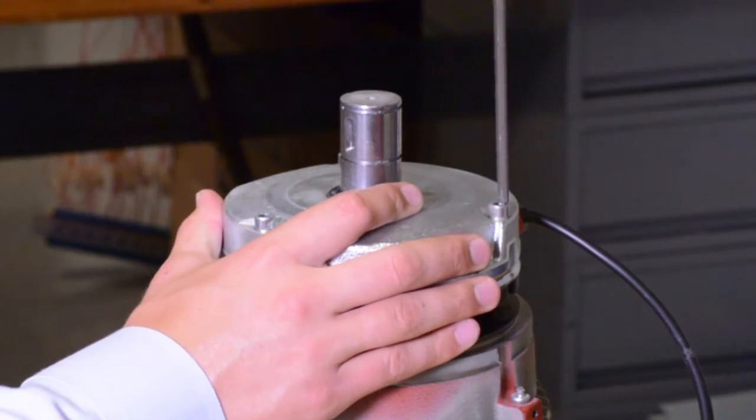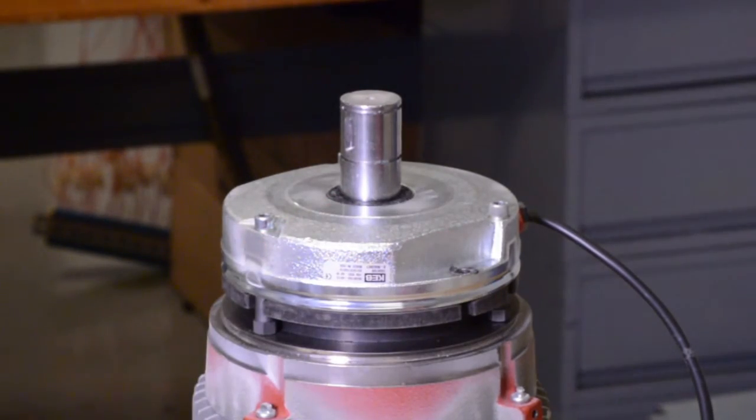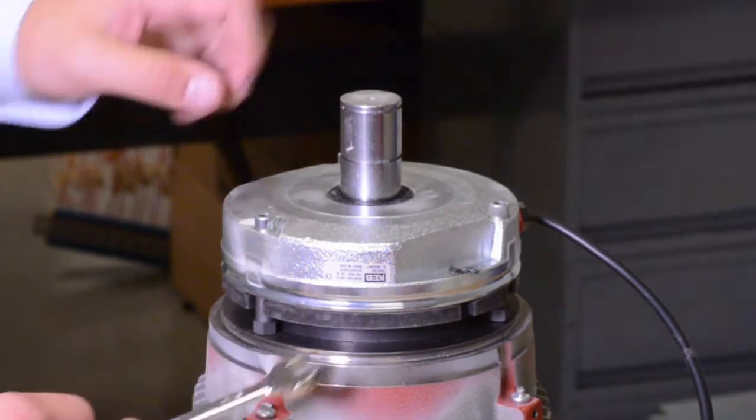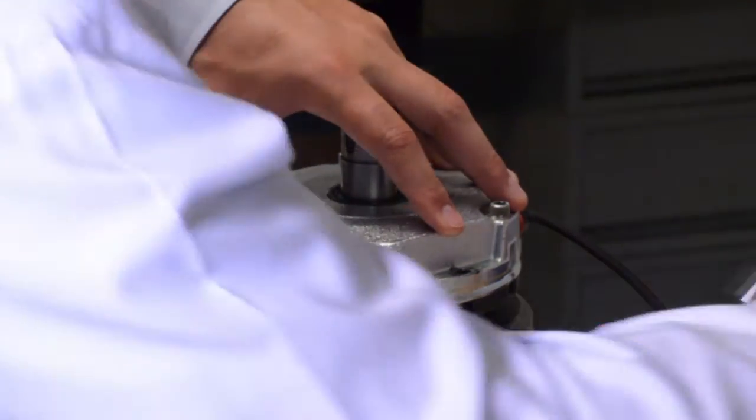First, loosen the top three head cap screws slightly with an Allen wrench. Next, take a wrench and adjust the adjustable spacers to either make the air gap larger or smaller.